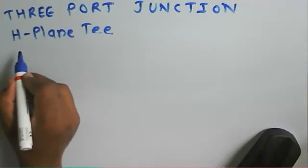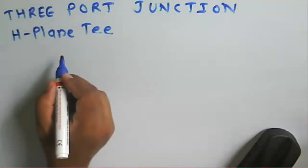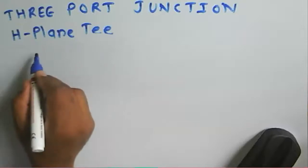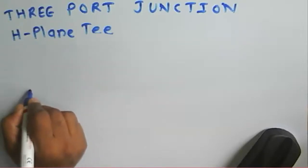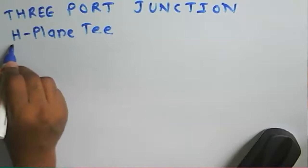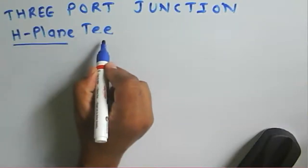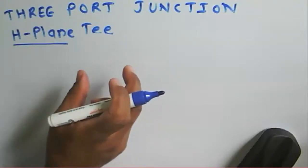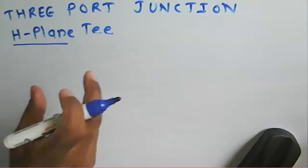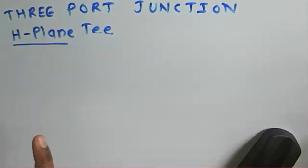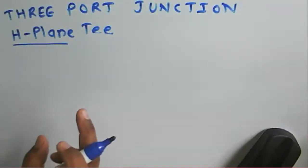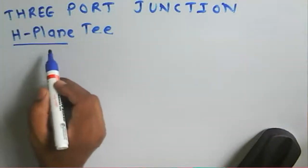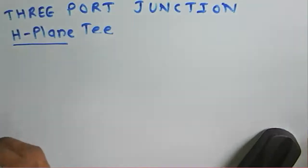There are two types of T-junctions: the E-plane T and the H-plane T. T-junctions are nothing but a port or a particular junction present in a given plane.